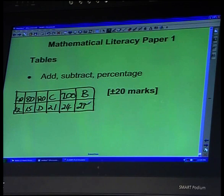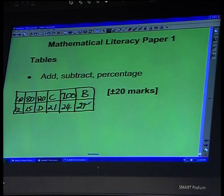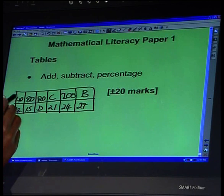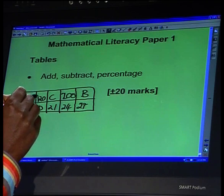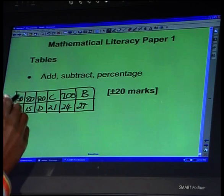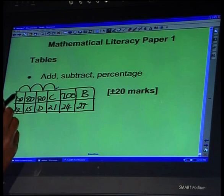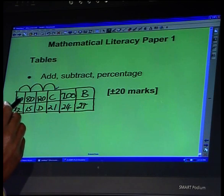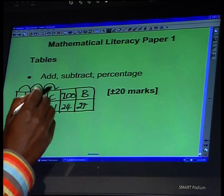This table will be based on a specific context. Context meaning this might represent something. It might be representing, for instance, bags of oranges. This corresponds with 40, this corresponds with 80, this corresponds with 120, and so on. Judging from this, I can see a specific pattern. That from 40, it was 80, 120, so it is clear that it's increasing by 40.